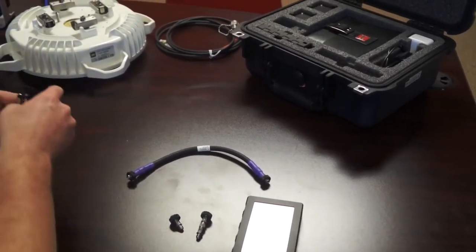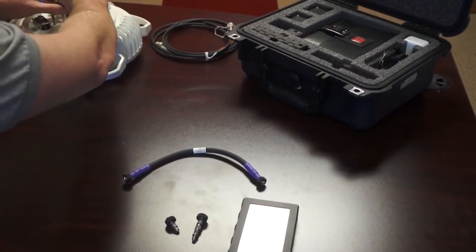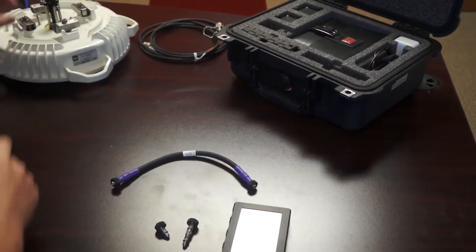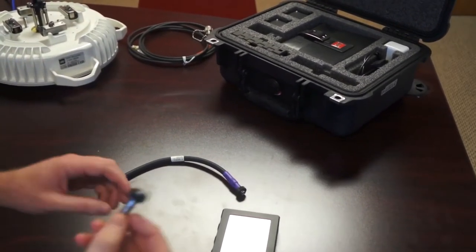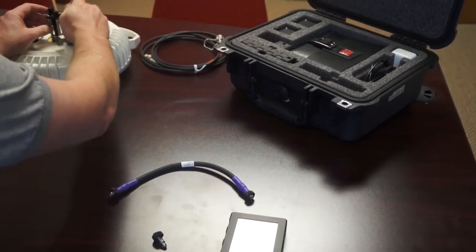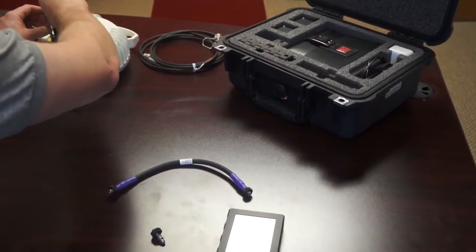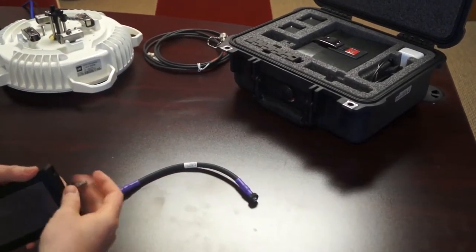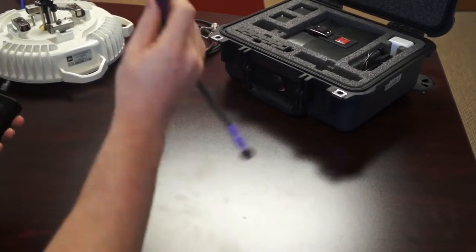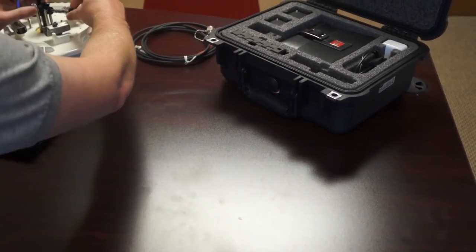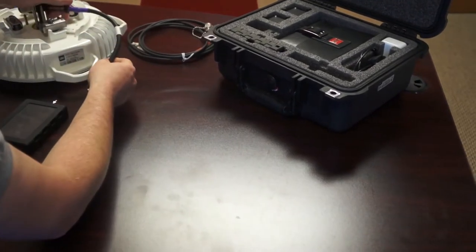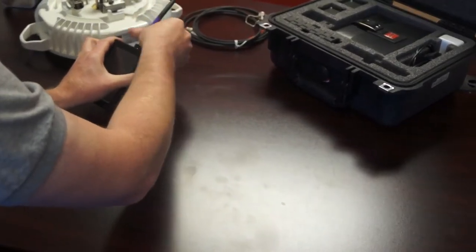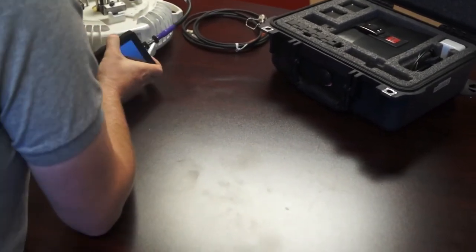So the first step is to attach the waveguide adapter to the radio. Now with the thumb screws on the waveguide adapter, it makes a very quick job instead of having to use a screwdriver. Next thing I'll do is attach one of the attenuators to the waveguide adapter and I will attach one to the Spectrum Compact. Last thing, I'll go ahead and connect everything together with the SMA cable. And I can now safely power up my radio.